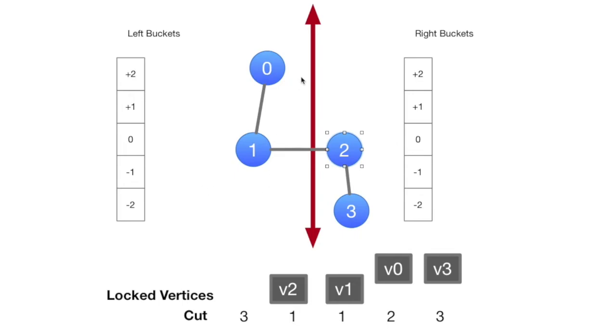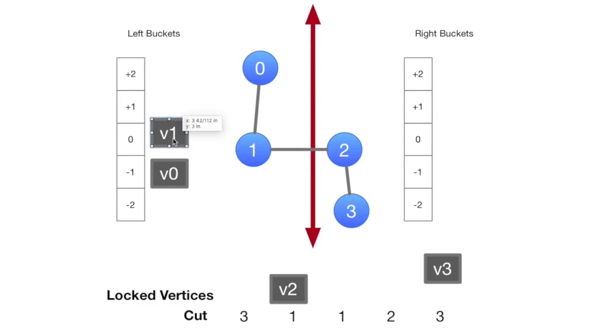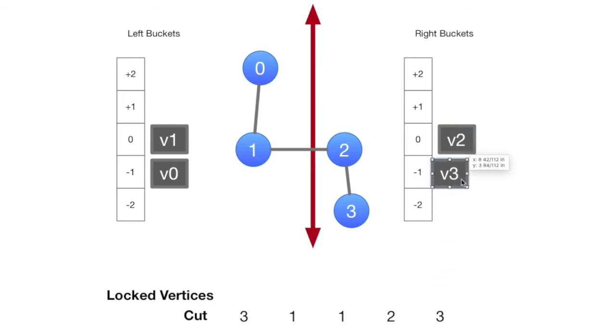What you'd normally do is run a pass, get to this configuration, and then you'd start the whole thing again from this arrangement, where you'd fill up the gain buckets again, and let's do that real quick. Now we've got a gain bucket. Vertex 0 is in the minus 1, makes things worse when we move it over. Vertex 1 would be in the 0 bucket. Vertex 2 would be in the 0 bucket. Vertex 3 would be in the minus bucket. And then we'd start this whole process all again from scratch.